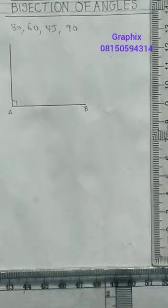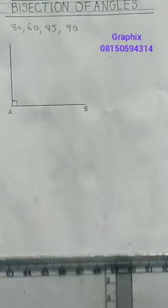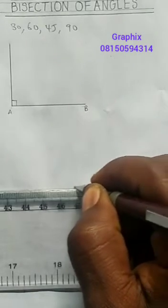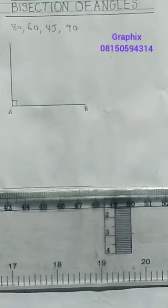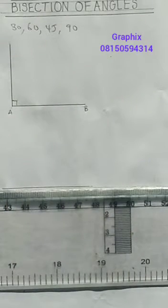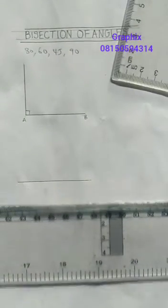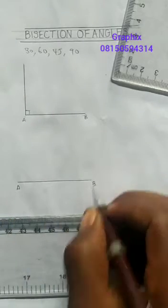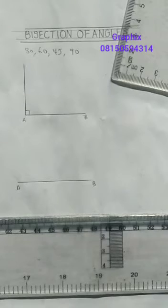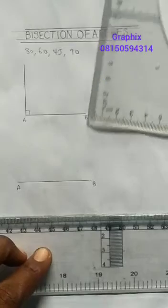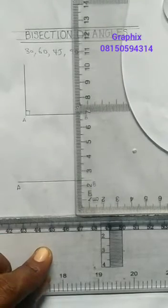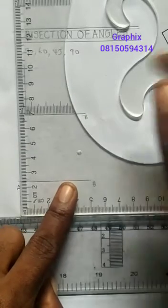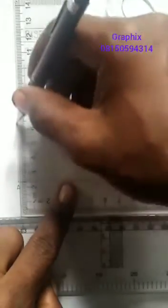Similarly, if I draw a similar line that way too and mark point A and point B, and I want to draw my 45 degree, I am going to place the same set square on my T-square. I will move it until it gets to the end of my A, and I will use my faint line to draw this.